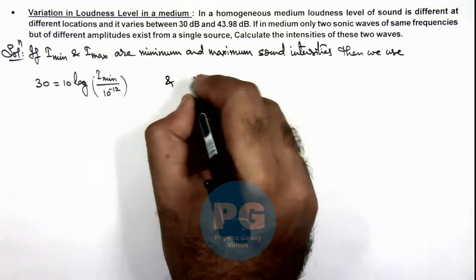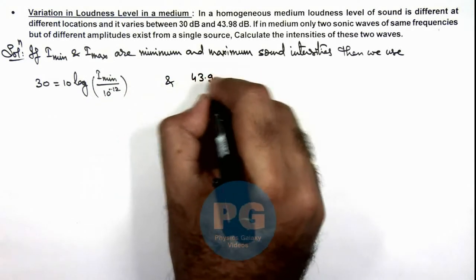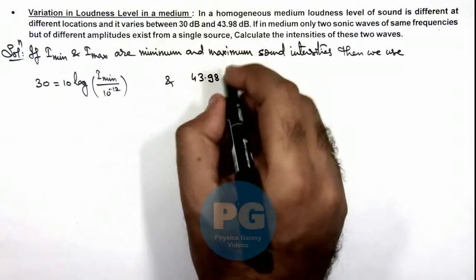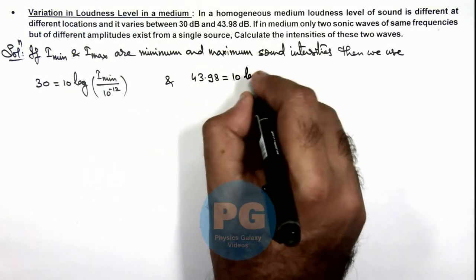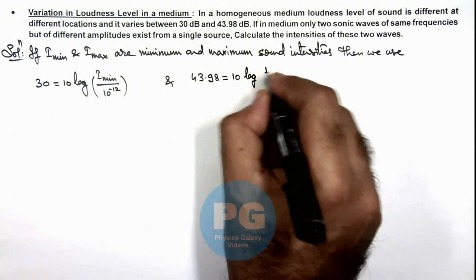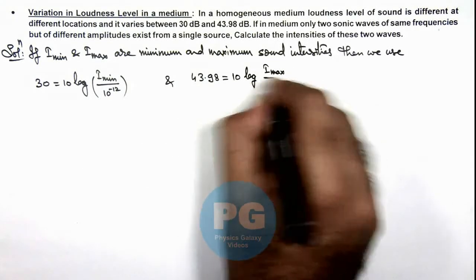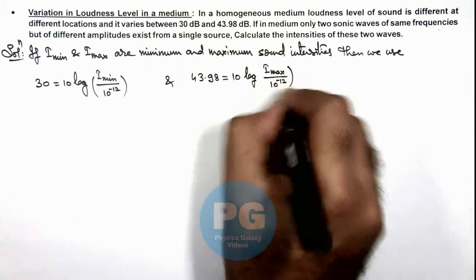And 43.98 which is the highest loudness level we are able to get can be written as 10 log of I_max by I_not which is 10 to power minus 12 watt per meter square.